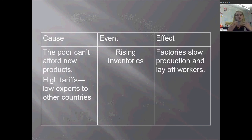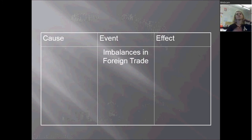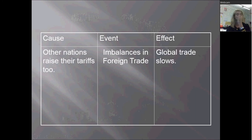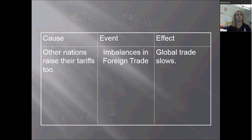As inventories keep rising, factories are going to start cutting production, and when you cut production, you start laying people off — driving unemployment up. Going back to the tariff issue, there are major imbalances. Other nations start raising their tariffs too, meaning we can't sell as much on the foreign trade market. Global trade starts coming to a standstill. One of the elements of the 20th century is that economies depend on global trade, and with countries not buying goods, it's going to affect economies all around the world. Global trade slows down very fast.